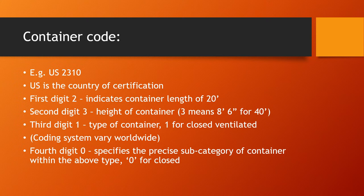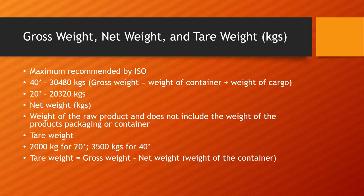You must note that the coding system may vary from country to country. The third digit '1' refers to the type of container — for example, '1' would refer to a closed ventilated container. The fourth digit '0' specifies the precise subcategory within that type, so '0' here refers to the closed part of the container. Then we have the gross weight, net weight, and tare weight given in kilograms.